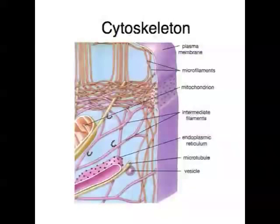Cells also have an internal framework of protein — microtubules, microfilaments, and intermediate filaments — and all these proteins supply strength and support for the cell. This supporting structure is like the framework of a house, and it's called the cytoskeleton.